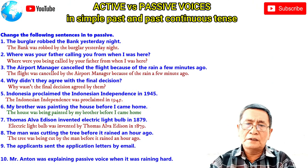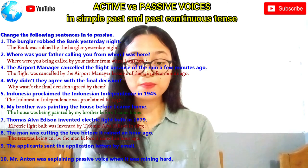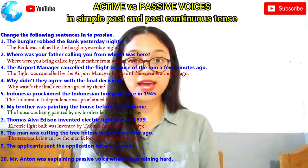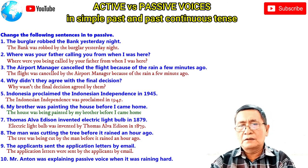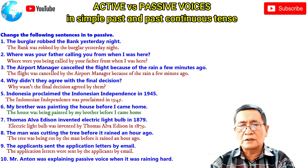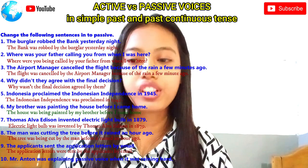Number nine: 'The applicant sent the application letters by email.' — Fena answers: 'The application letters were sent by the applicant by email.' Good answer. Number ten: 'Mr. Anton was explaining passive voice when it was raining hard.' — Angi answers: 'Passive voice was being explained by Mr. Anton when it was raining hard.' All right, thank you very much.